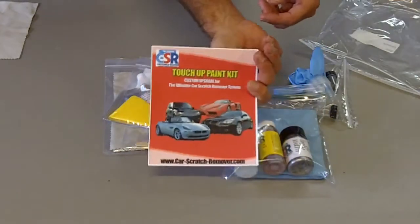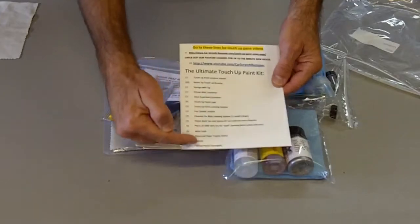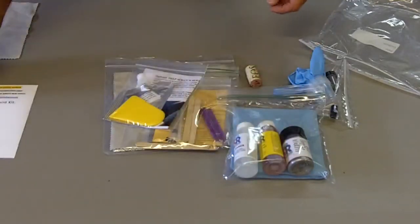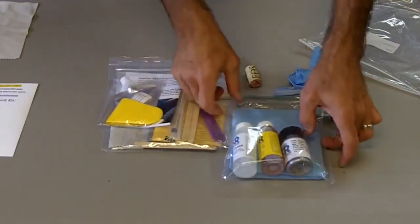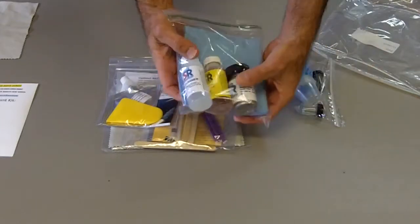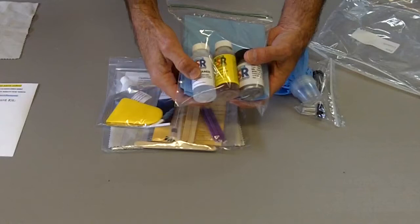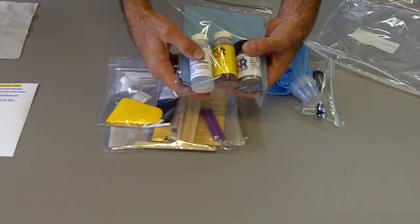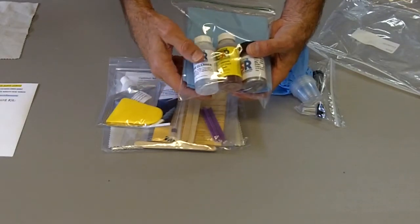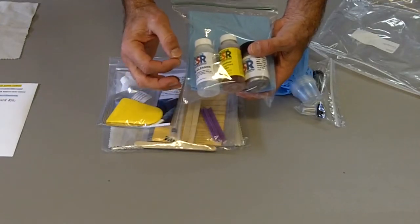So also on the back side of this card, all the components are listed here that are in the kit. Now the first thing you're going to notice is when you open this up, there's a bottle of pre-cleaner. This is used for scratches or chips to degrease or clean up the area if you're just going to do a quick touch-up.